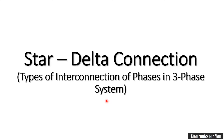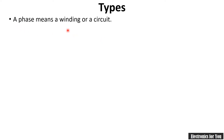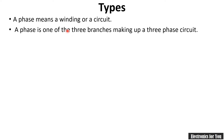Hello friends, welcome to YouTube channel Electronics For You. In this video I will explain star-delta connection, or we can say the types of interconnection of three-phase systems, which is further classified into star connection or delta connection. A phase means a winding or a circuit.